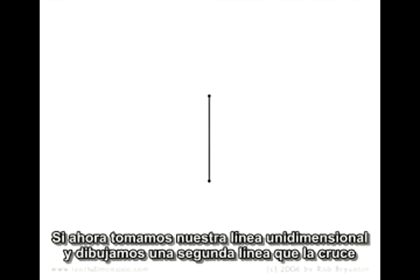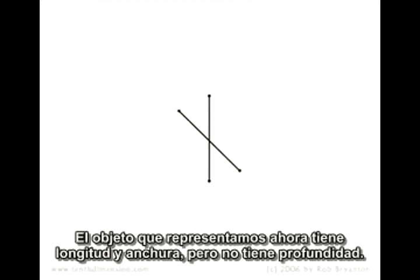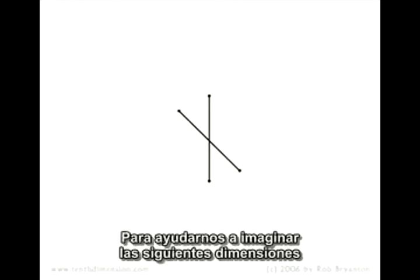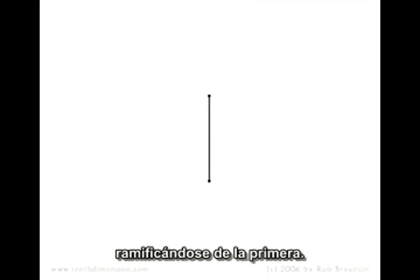If we now take our first-dimensional line and draw a second line crossing the first, we've entered the second dimension. The object we're representing now has a length and a width, but no depth. We're going to represent our second-dimensional object as being created using a second line which branches off from the first.